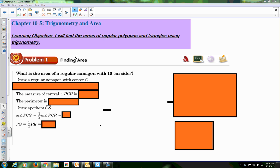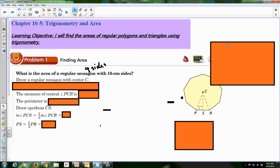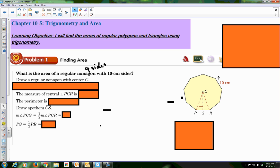Problem number one is finding area. It says, what is the area of a regular nonagon with 10 centimeter sides? The first thing we're going to do is draw a nonagon, that is nine sides. So it kind of looks like this. It's got 10 centimeter sides.